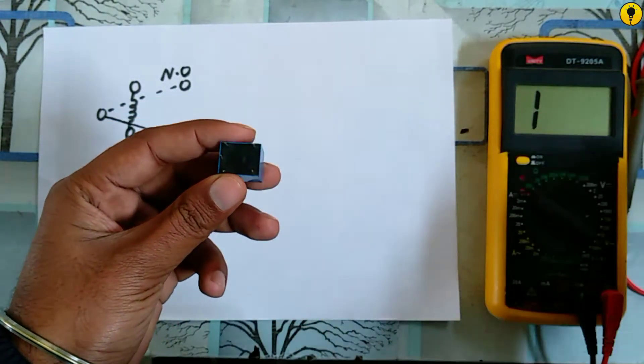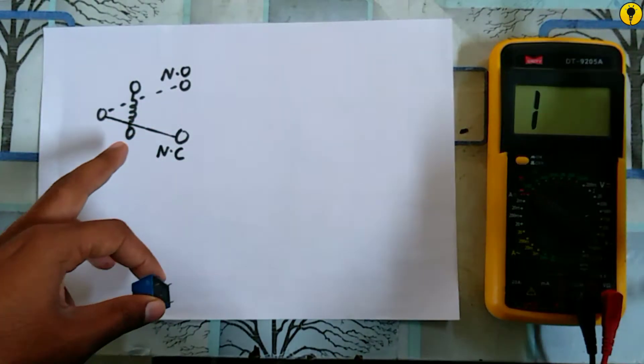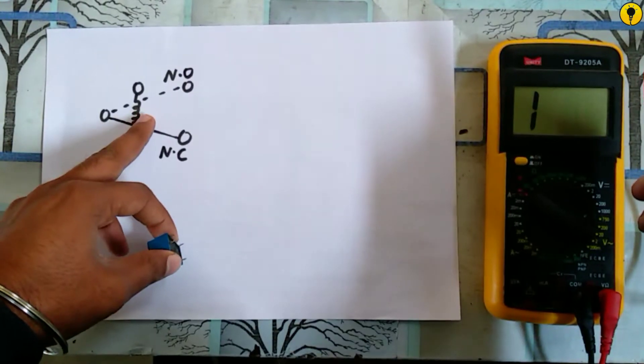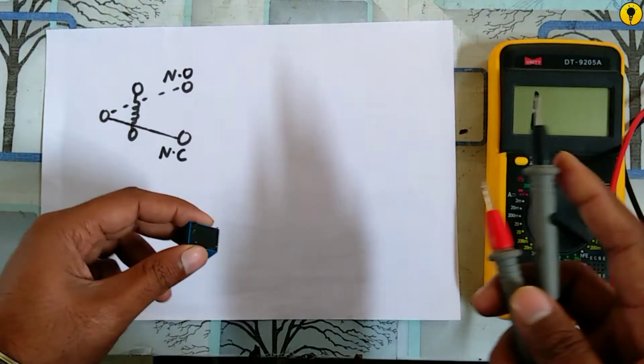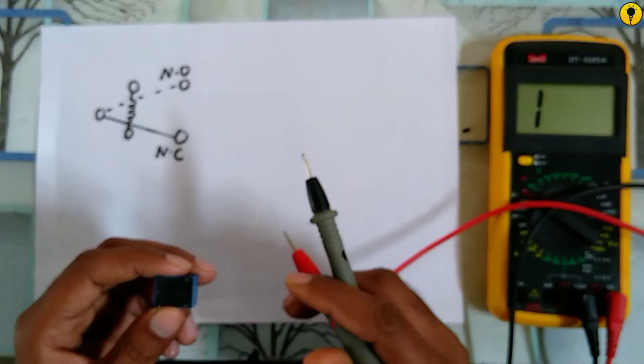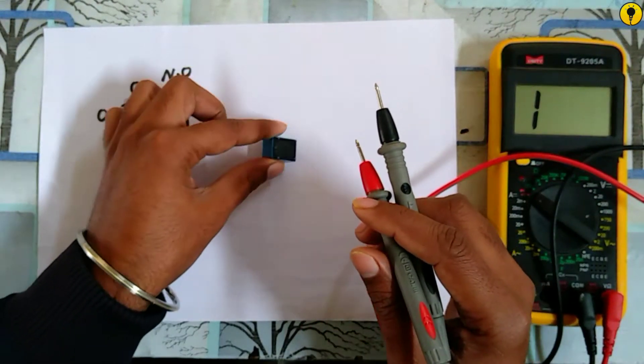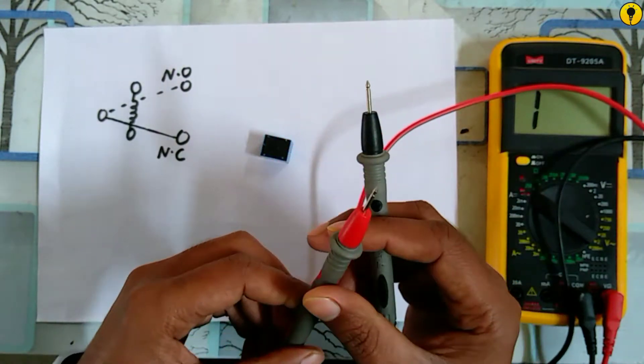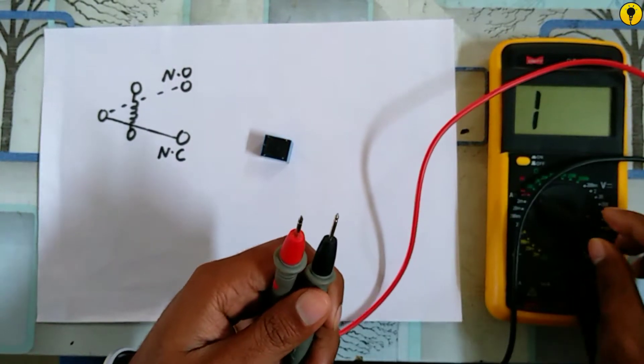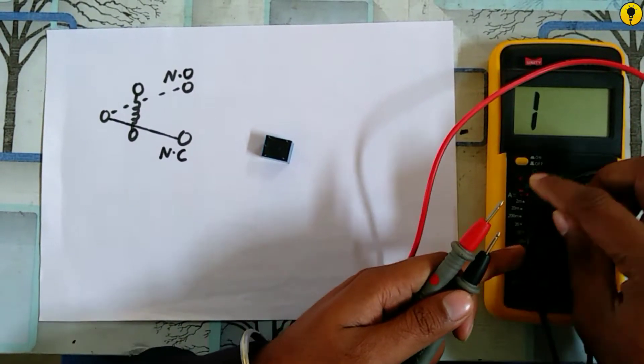The coil is connected to these two terminals. The coil produces a magnet which further performs some action to make or break the contacts. Now first, set the multimeter on continuity.